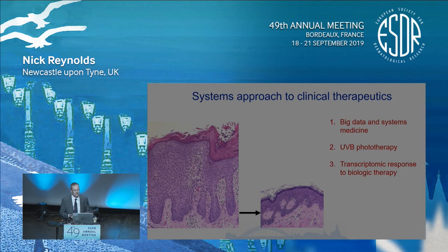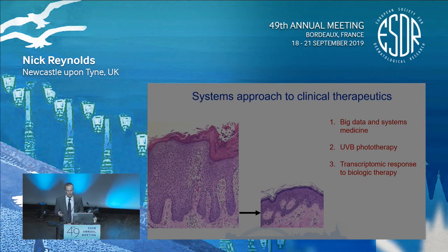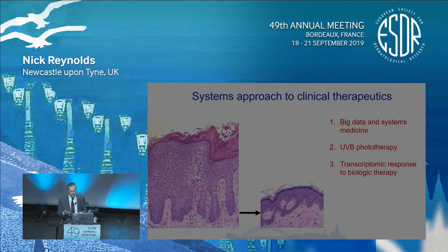There's been an explosion of interest in what we call big data and its application to medicine. I'll briefly cover this in the first part of the lecture. Secondly, I'll focus on studies we've done looking at a systems biology approach to how UV may remodel the epidermis. And then thirdly, I'll illustrate some very recent transcriptomic data generated by the SORT consortium and how that is providing insight into how biologics may work and how we may be moving towards personalised or precision medicine.